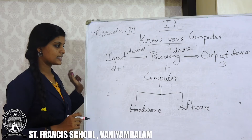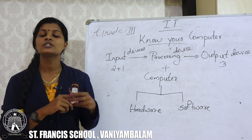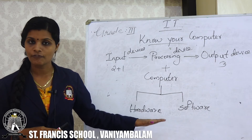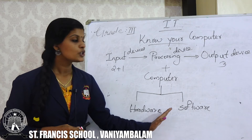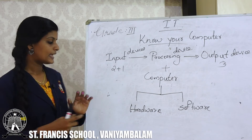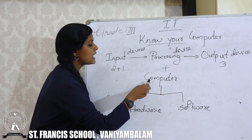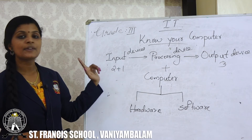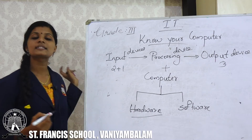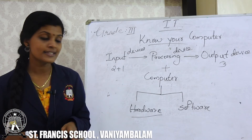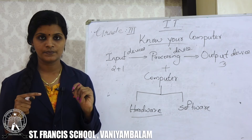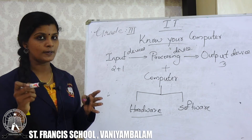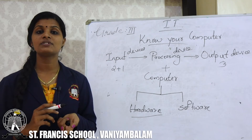We have also discussed the two major elements of computer, which are hardware and software. Both of these combine to make the computer work more efficiently. Then we discussed what is computer hardware — the parts or devices of the computer which we can see and touch, which are the keyboard, monitor, CPU, CPU box, mouse and so on.